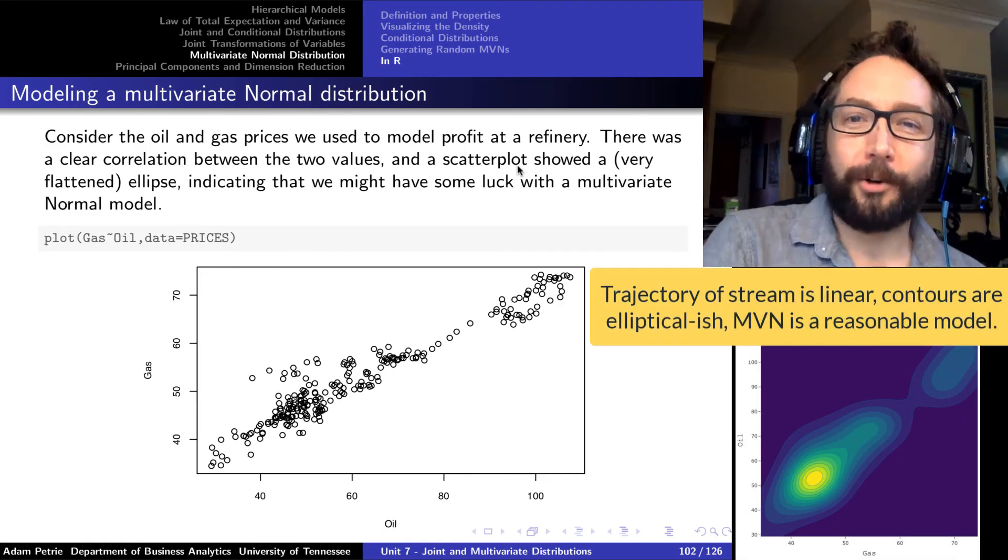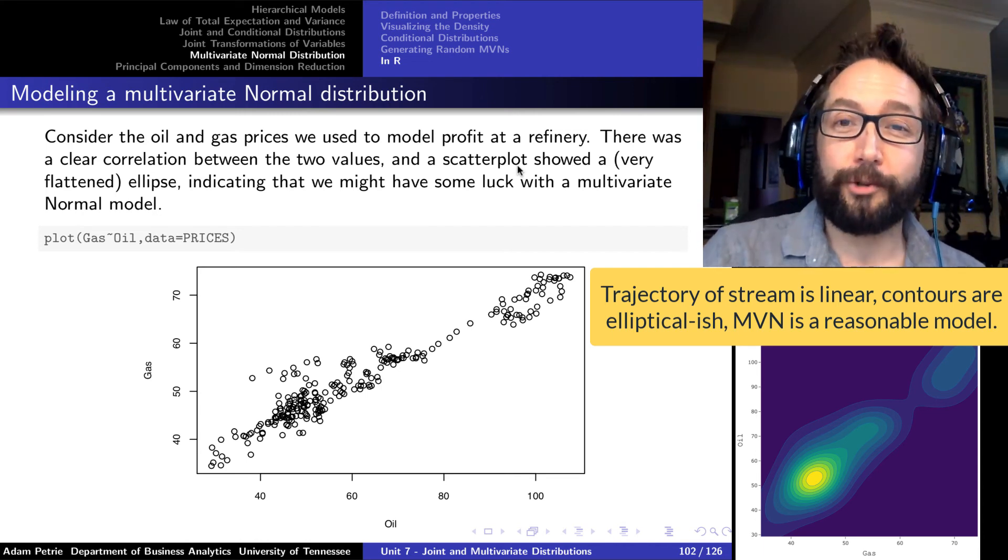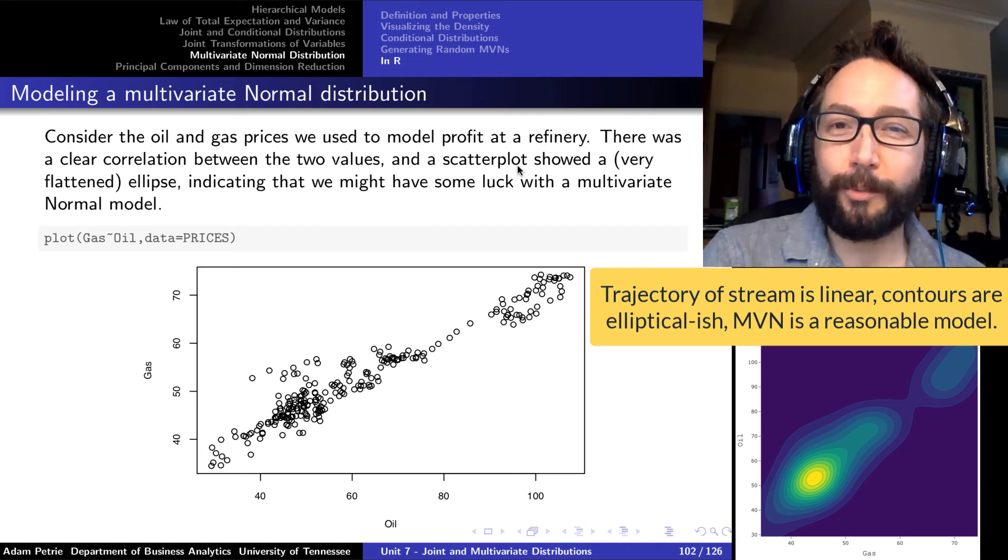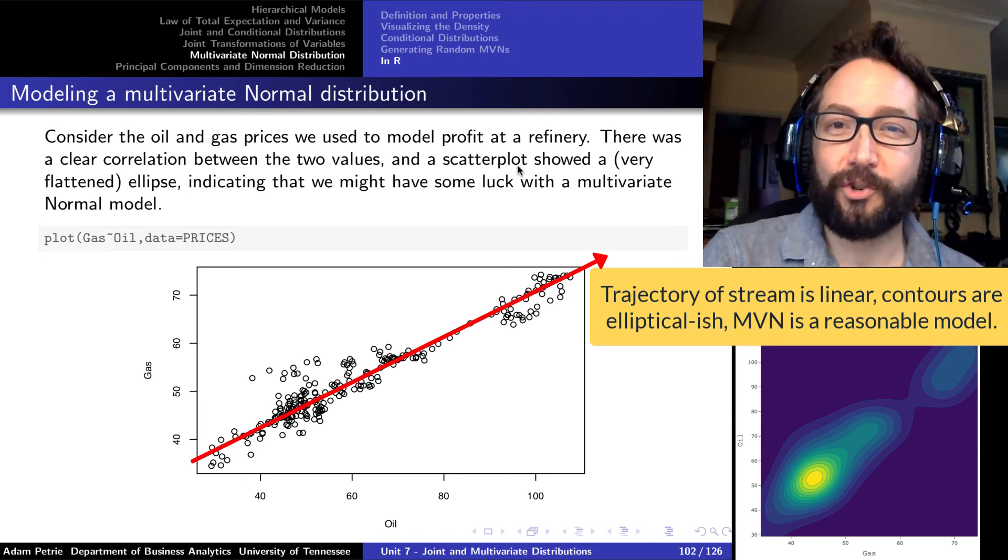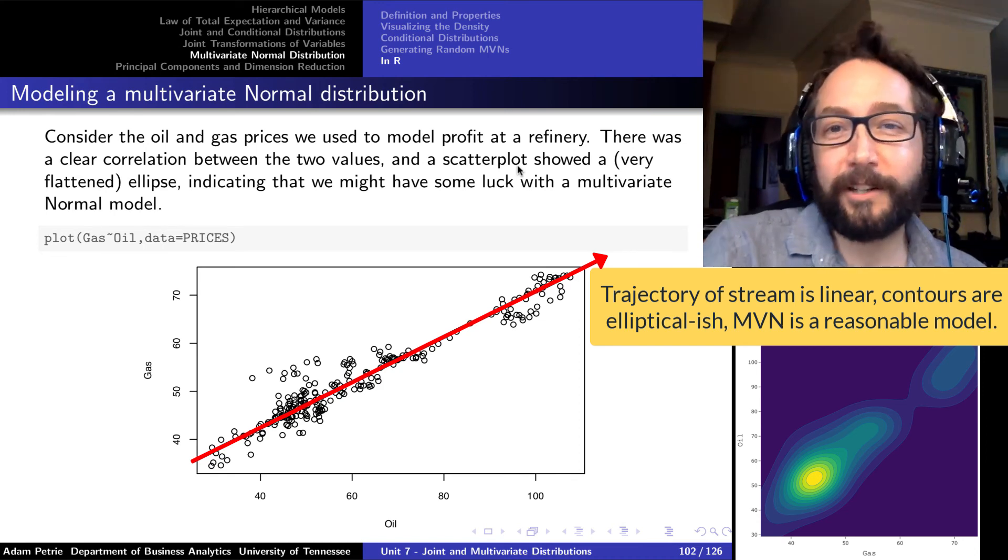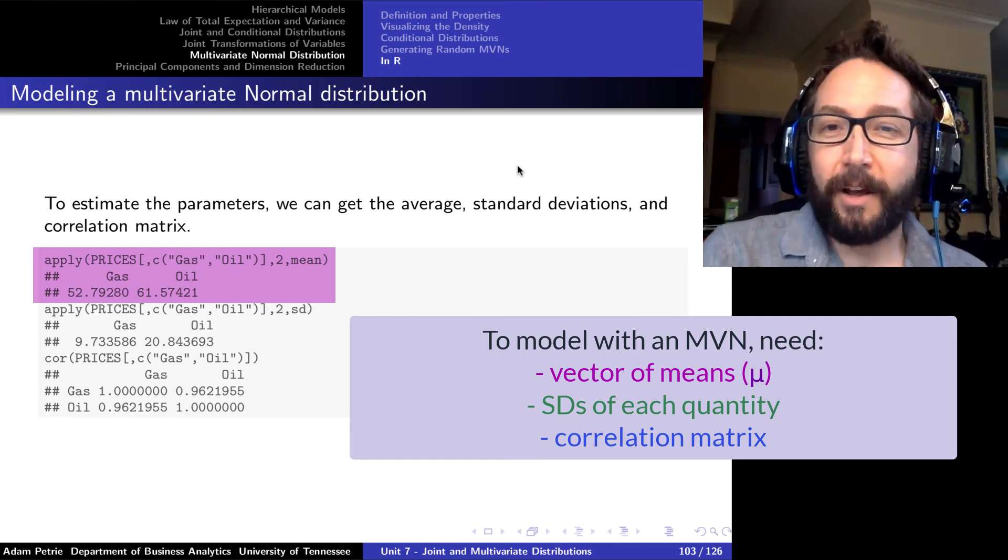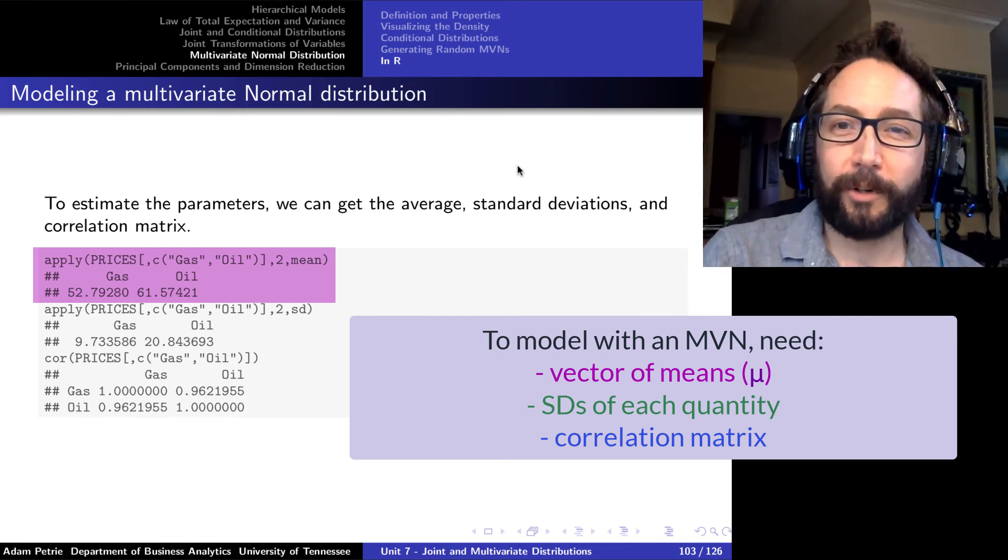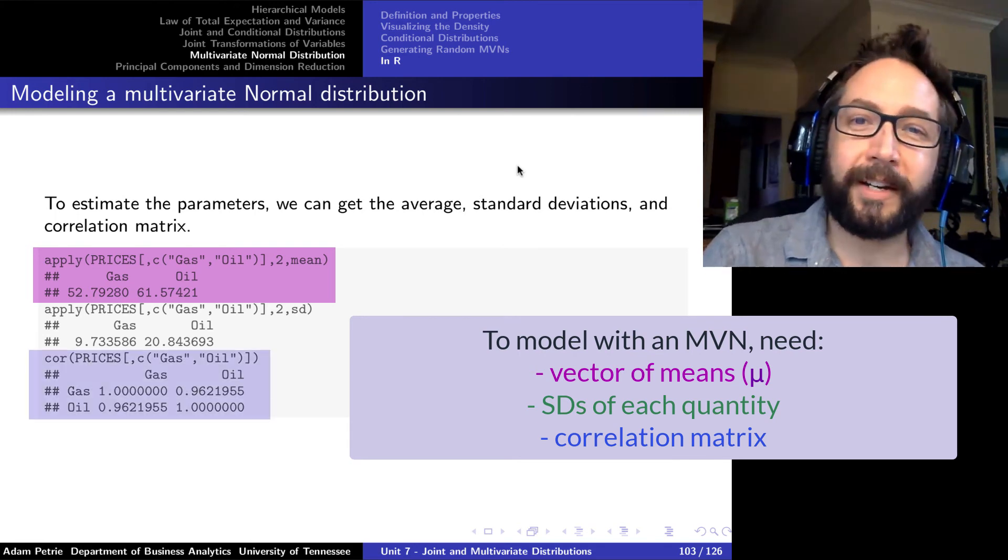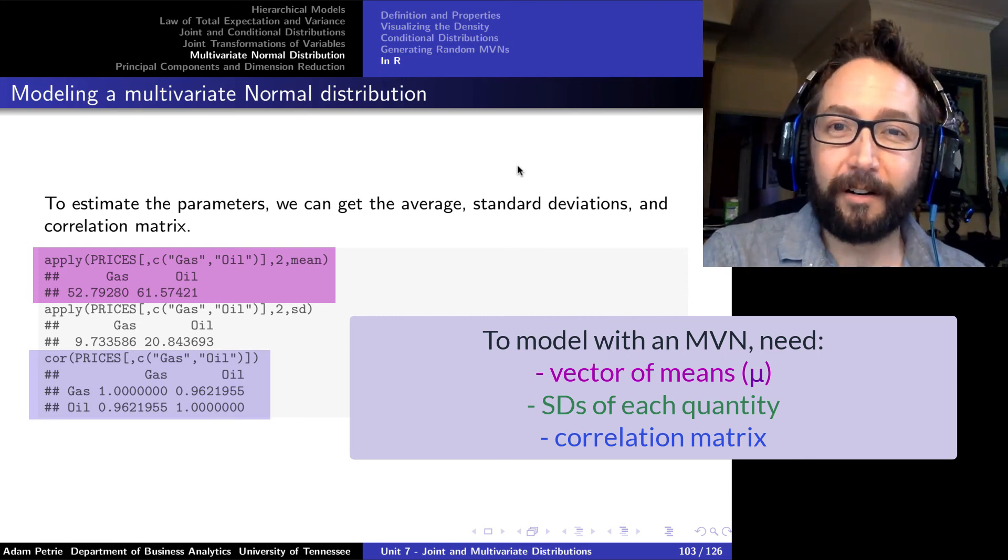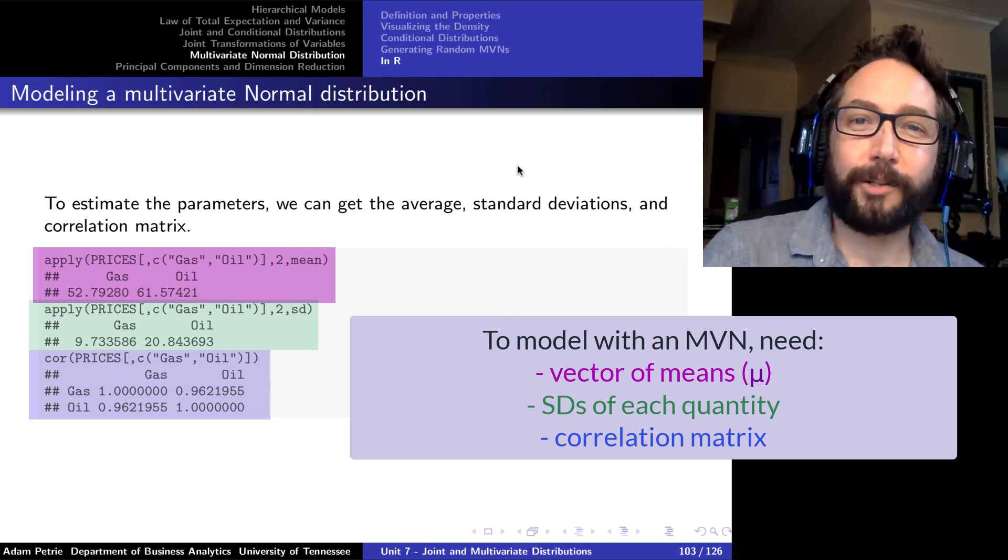So let's try to model the combination of gas and oil prices that we have with a multivariate normal distribution. Making a scatter plot of those two quantities, we see what looks more or less like a flattened ellipse, which is what a multivariate normal distribution can provide us. So let's go for it. Well, if we get the average values of oil and gas, that's going to be the components of the mu vector that we're going to have in our model. And if we ask for the correlation matrix of those two quantities, that's going to let us know what we want to have as our covariance matrix, after we factor in what the standard deviations of the two quantities are as well.